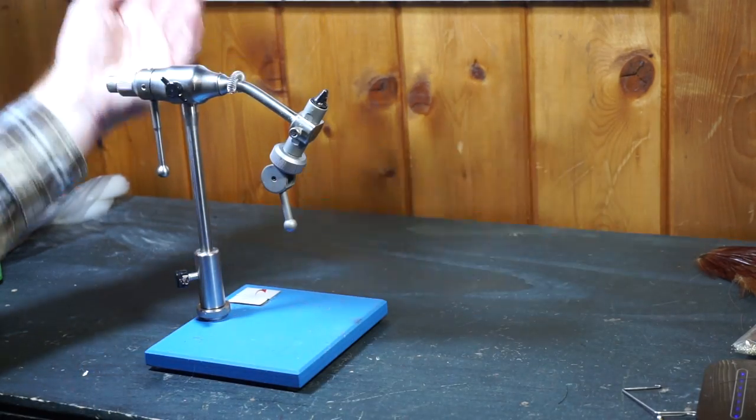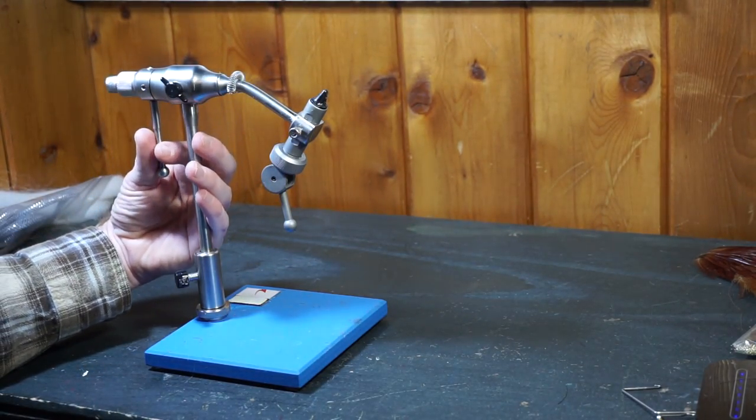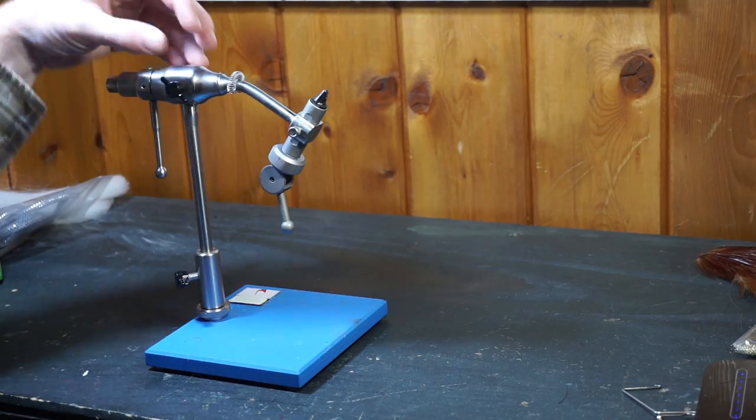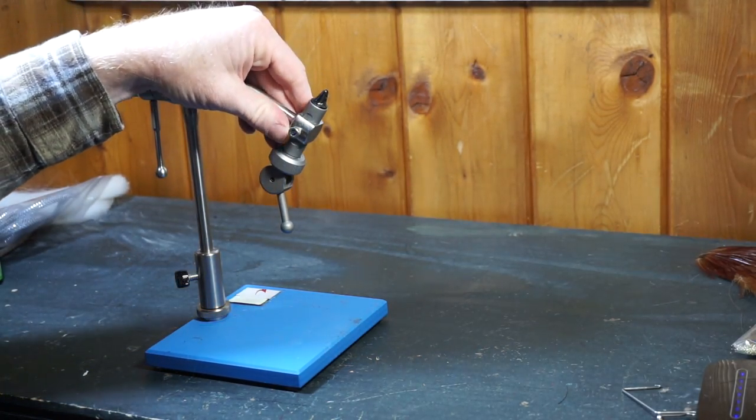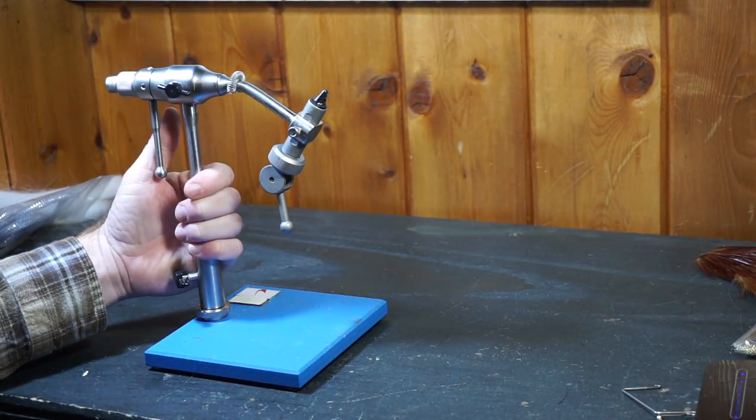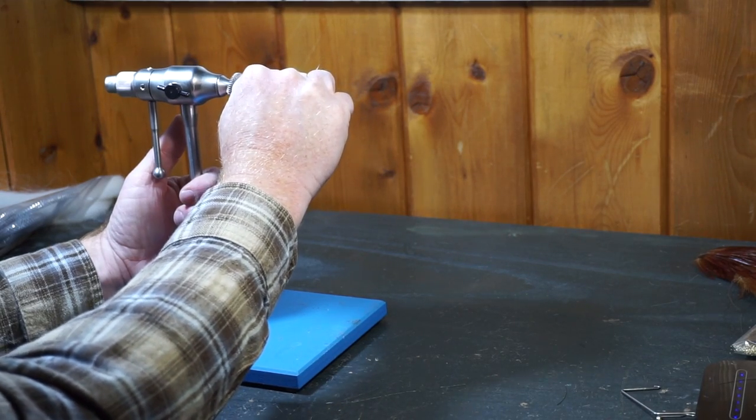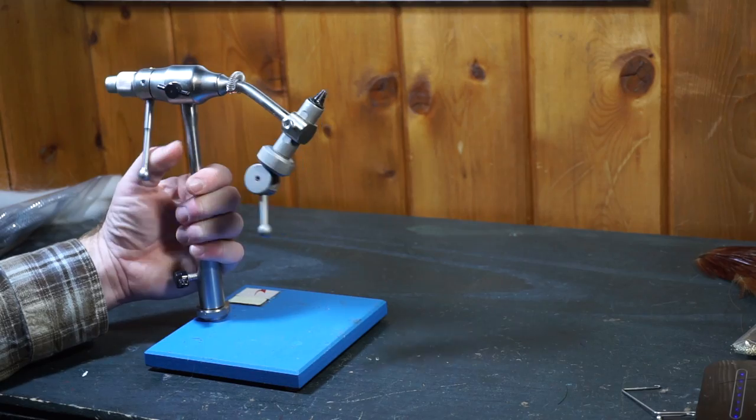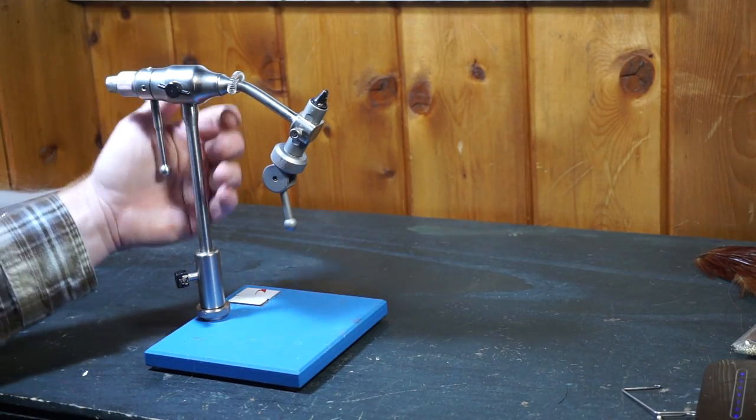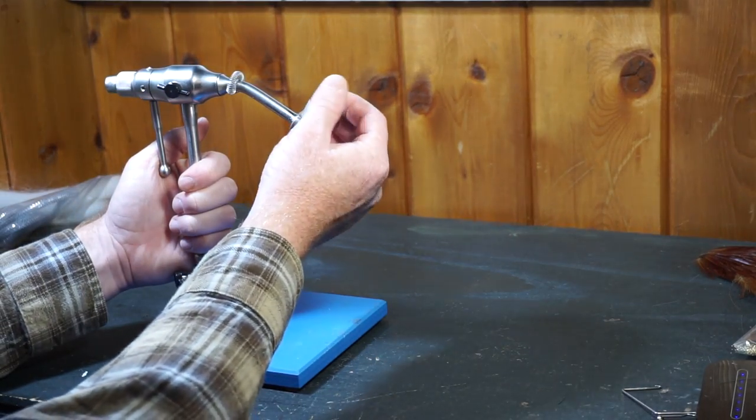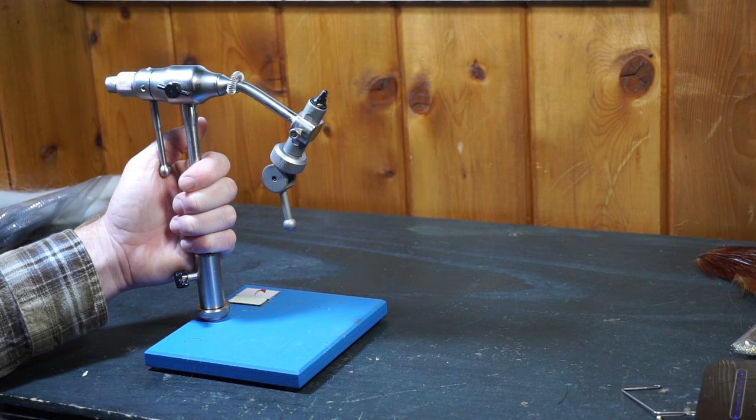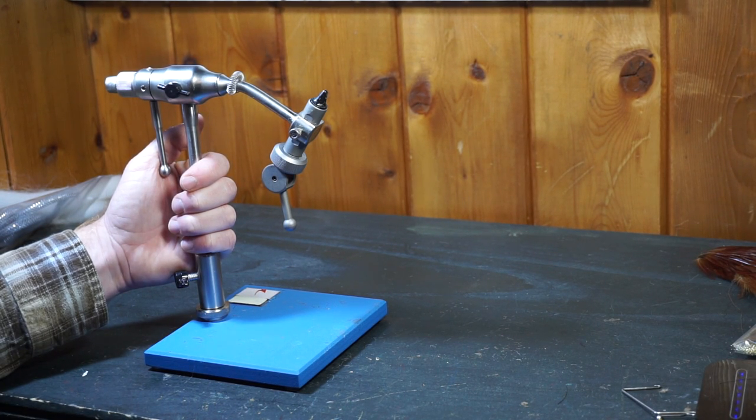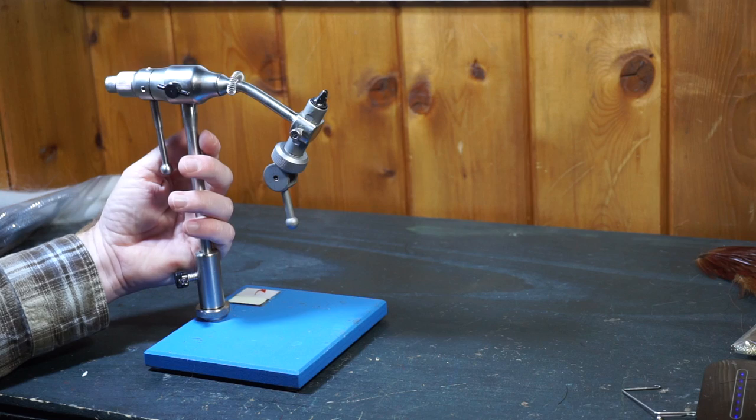So right off the bat, this is a good vise. I think for the price, this is a good vise. You can tell it's made beefy. It is very beefy. There's just no way, I mean, I could like hang on this thing here with my full body weight, and I don't think it's going to break. The rotary feature is pretty good. The jaws are decent. You know, they definitely hold flies. There's a lot of decent things about this vise.